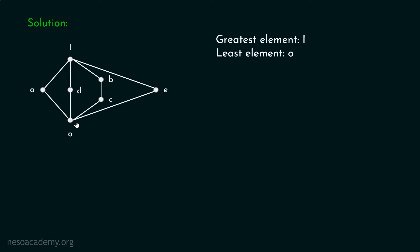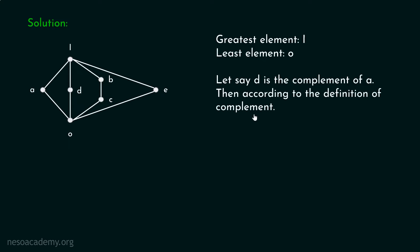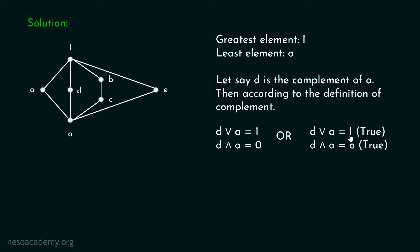Let's use the trial and error method. Let's say D is the complement of A. According to the definition of complement, A ∨ D must equal 1 and A ∧ D must equal 0. This means the least upper bound of D and A must equal I, and the greatest lower bound of D and A must equal O. The least upper bound of D and A is indeed I, and the greatest lower bound of D and A is O. So D ∨ A = I and D ∧ A = O. Therefore, D is the complement of A.